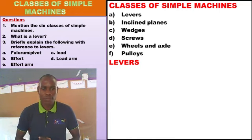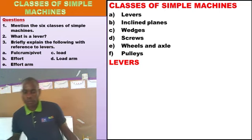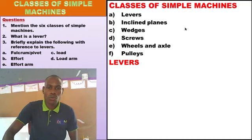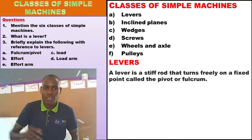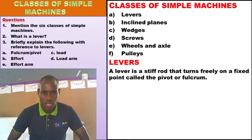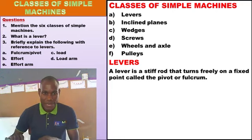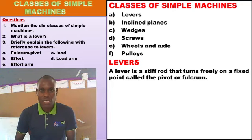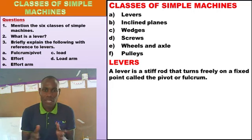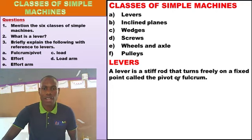What is a lever? When we talk about levers, we mean a machine which is stiff. A lever is a stiff rod that turns freely on a fixed point called a pivot or fulcrum. There are three words you need to know: 'stiff' — meaning unable to bend — and then 'pivot' and 'fulcrum'. A lever is a stiff rod that turns freely on a fixed point, and that fixed point is called the pivot or fulcrum.